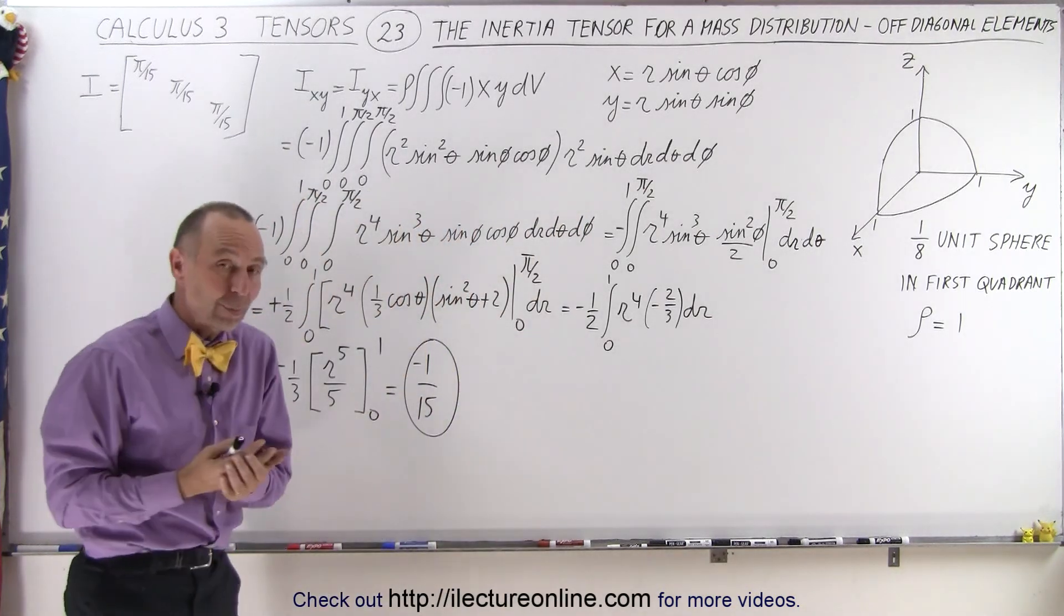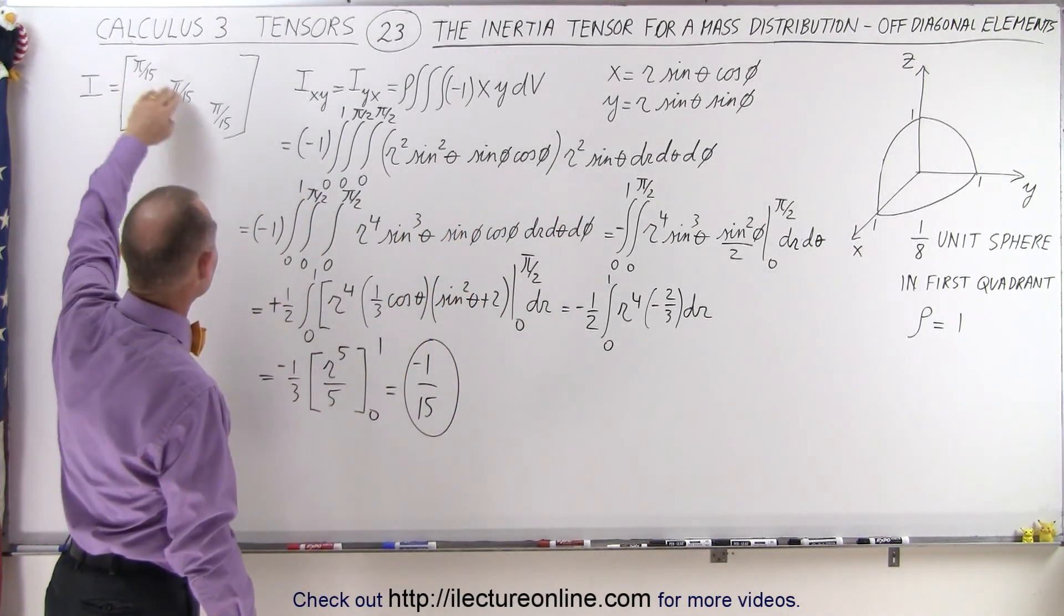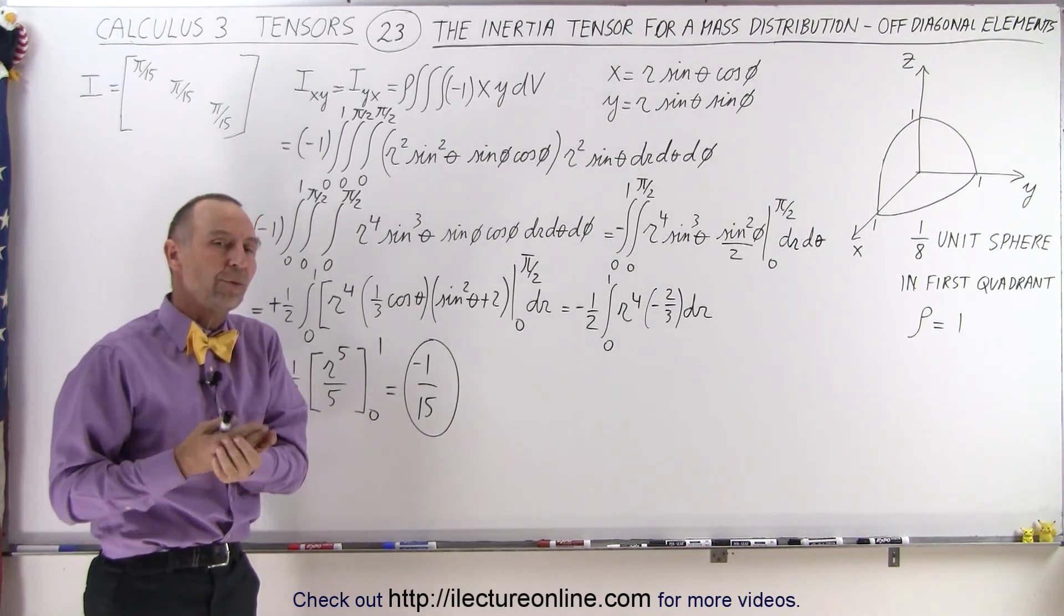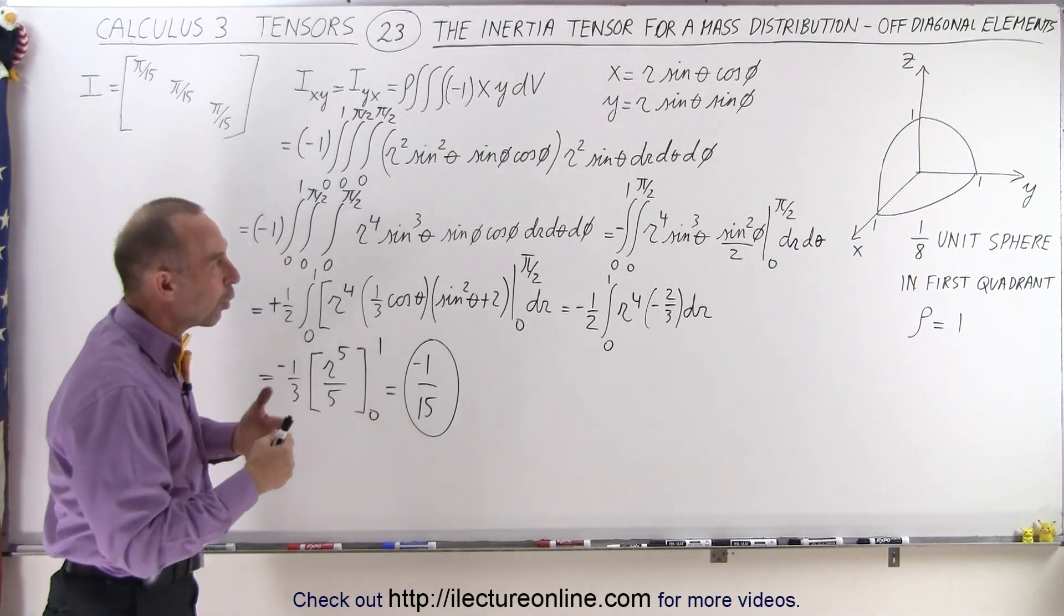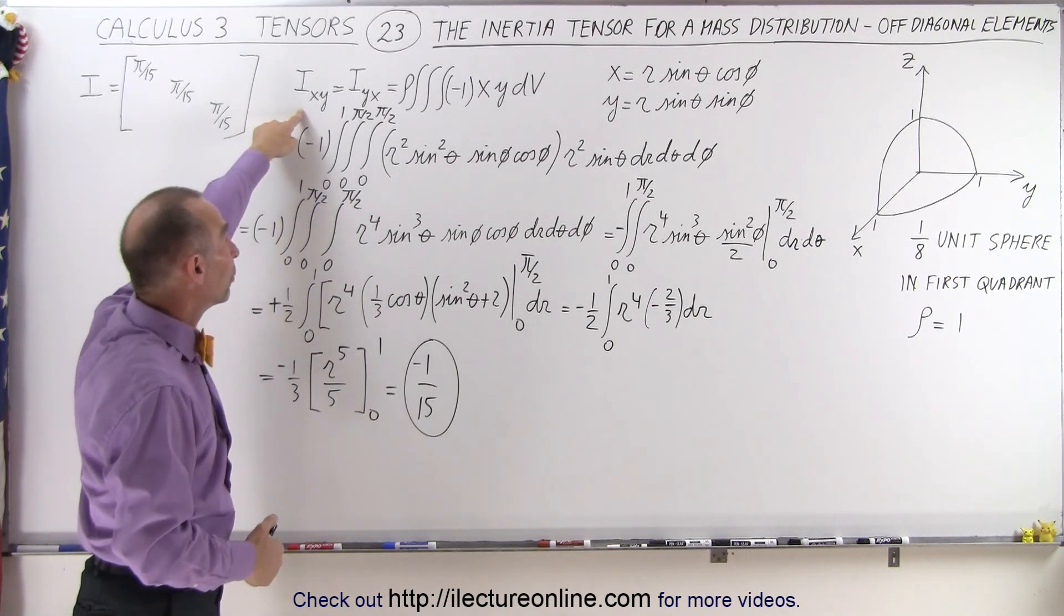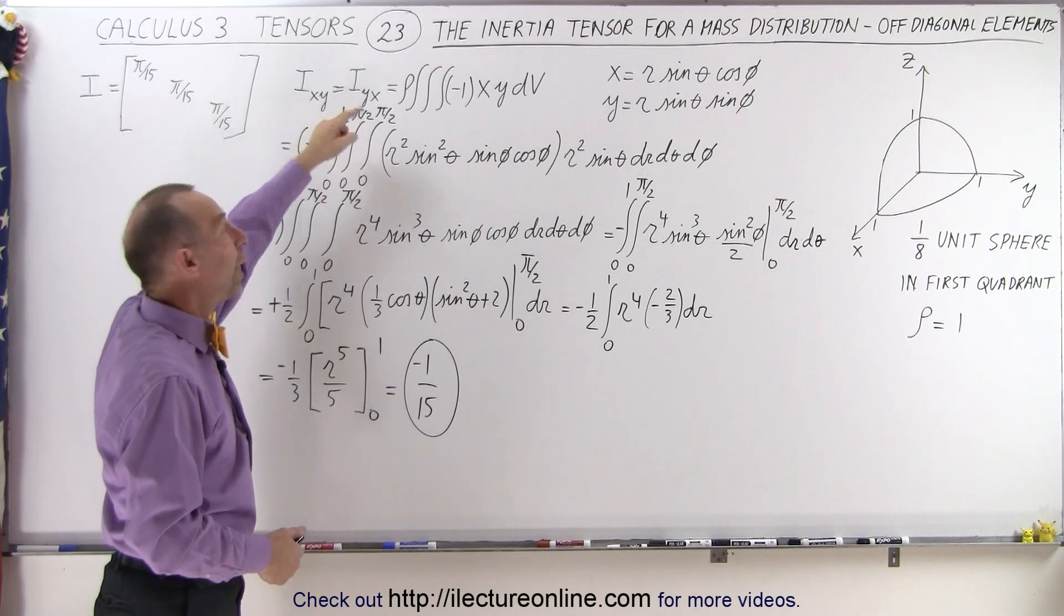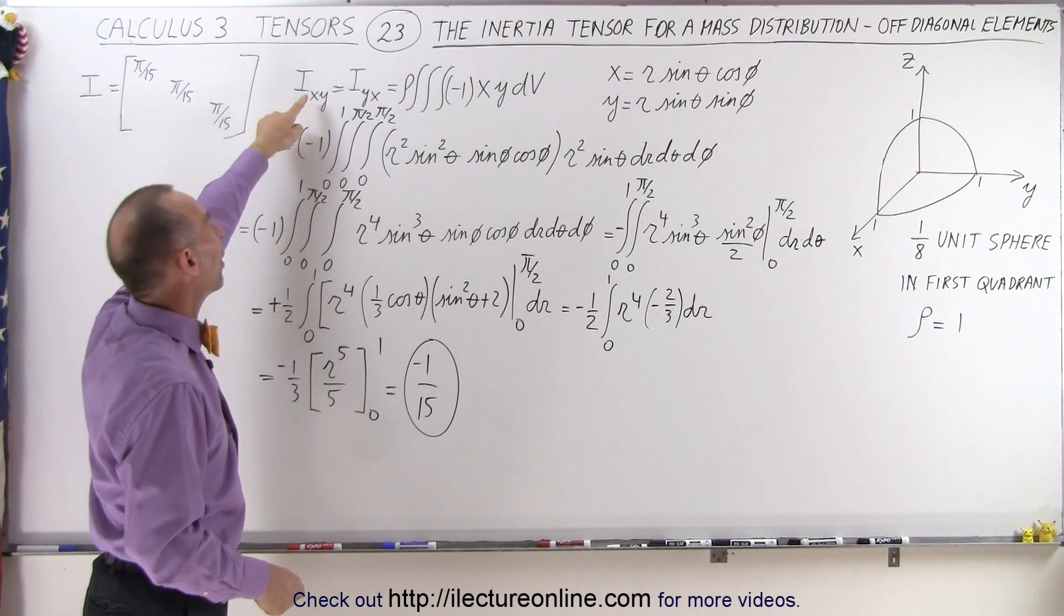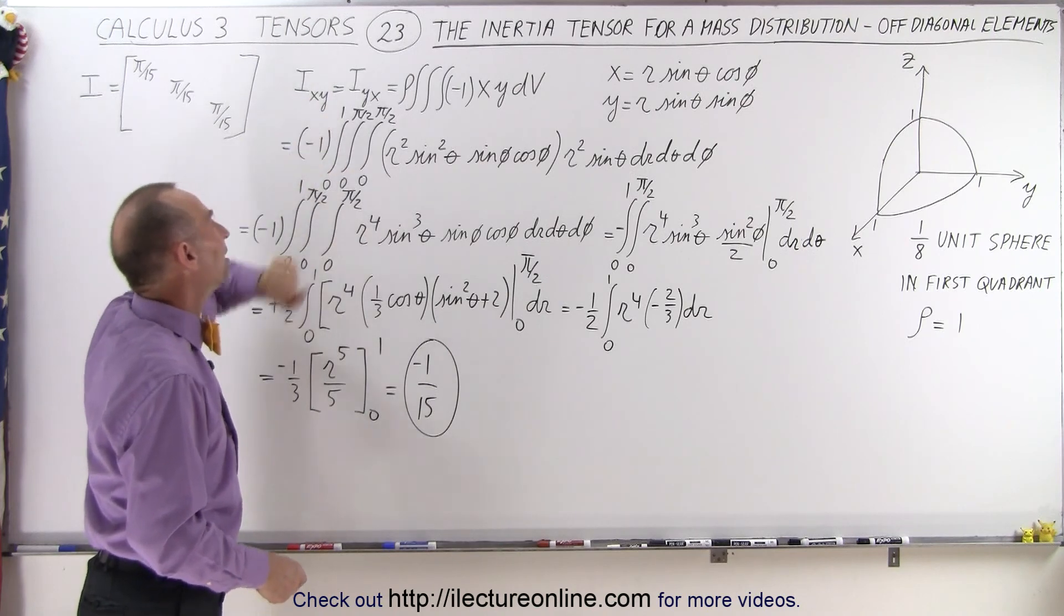And for the same reason that we had symmetry and got the same value for all diagonal elements, we have a symmetry so that we'll find the same value for all the off-diagonal elements. Whatever we find for the Ixy, which of course is equal to the Iyx, we should find for the Ixz and for the Iyz as well.